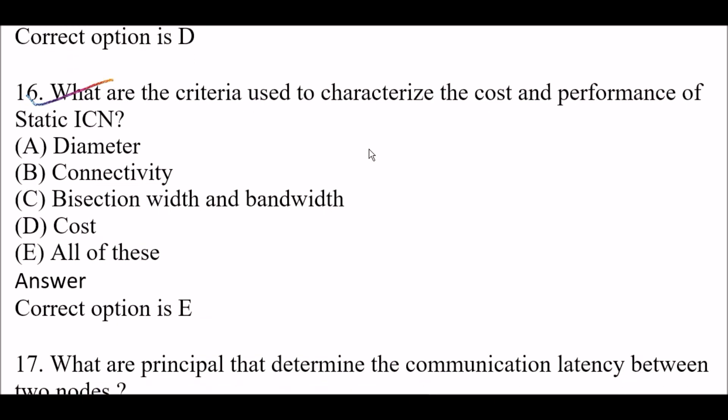Next question: what are the criteria used to characterize the cost and performance of static ICN? Option A, diameter; option B, connectivity; option C, bisection width and bandwidth; option D, cost; option E, all of these. The right answer is option E, all of these. The criteria include diameter, connectivity, bisection width and bandwidth, and cost.